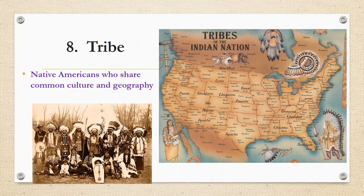The word tribe is a basic term but it means Native Americans who share common culture and geography. This map of the United States gives you a picture of the many tribes that were all over North America. Those in a bigger font are the major tribes and the smaller font shows some of the minor tribes. You can actually see a photograph of a tribe in the bottom left corner.